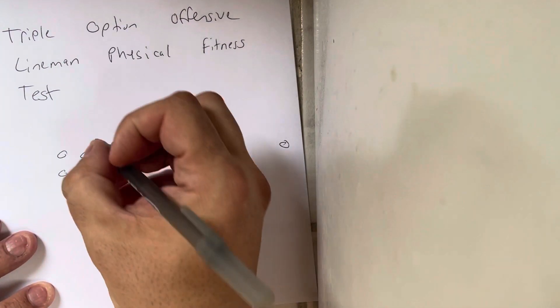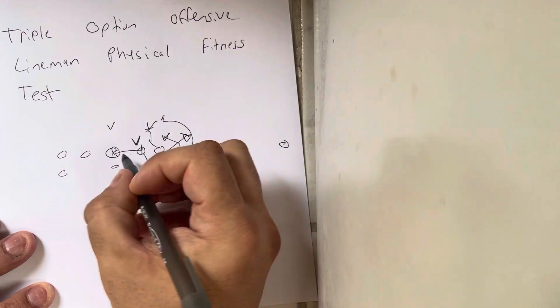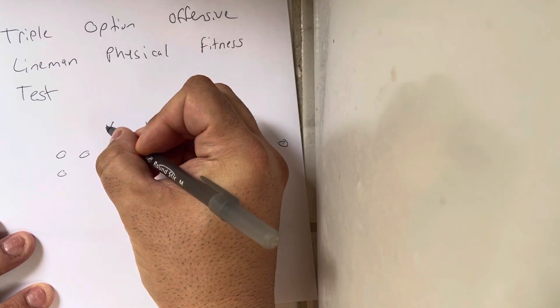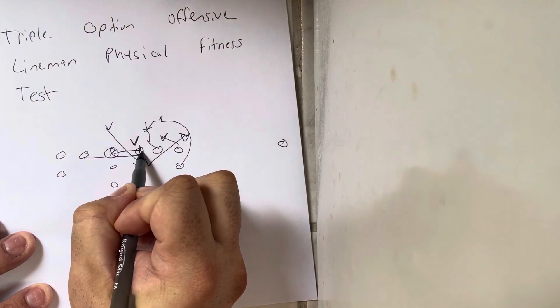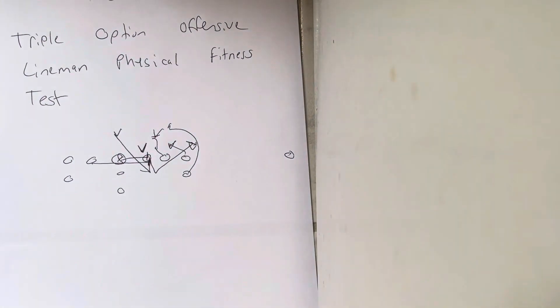Let's say, for example, you've got a linebacker right here. And as soon as the center does that, he just goes. The guard's got to be able to open, run, and get hip to hip with the center to cut that off.